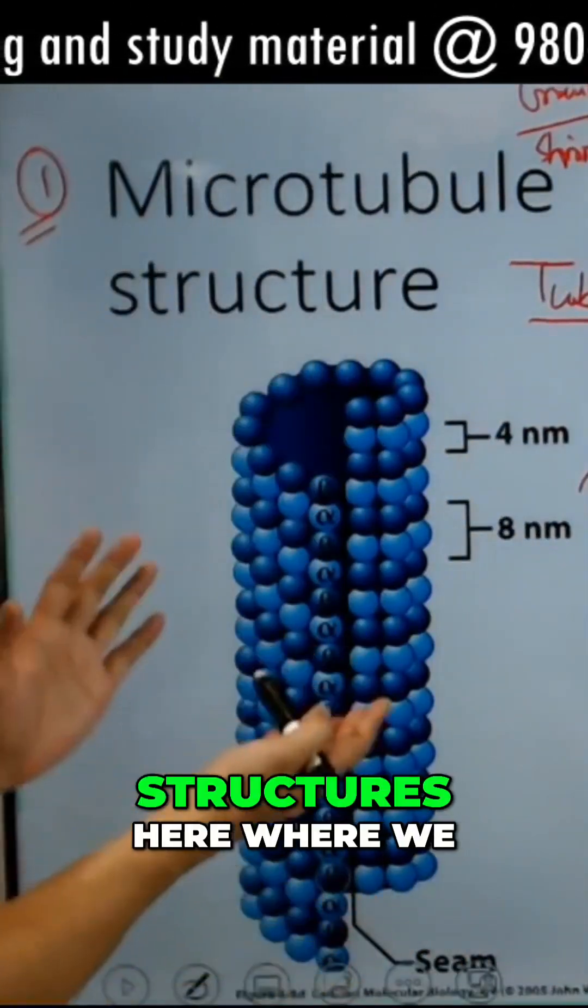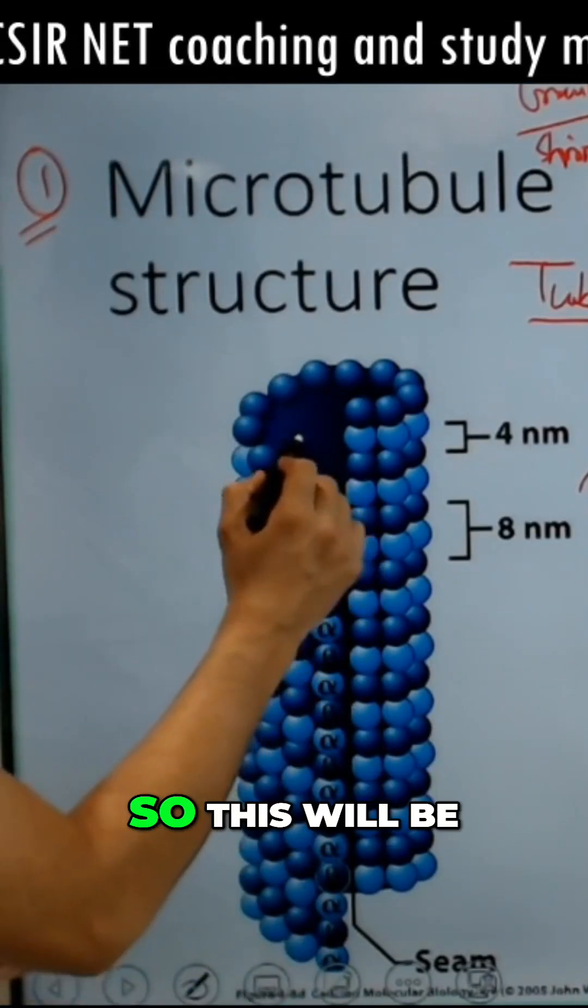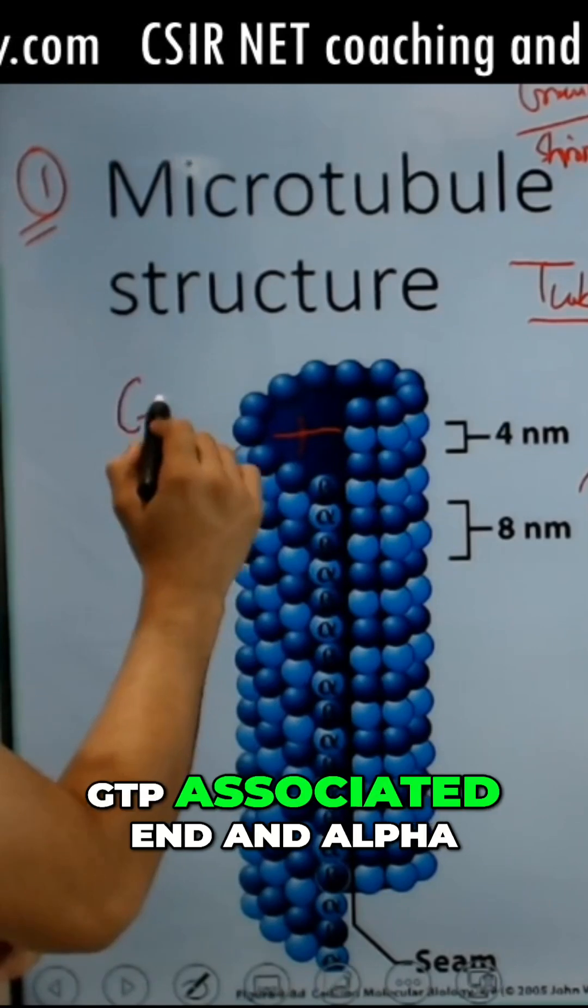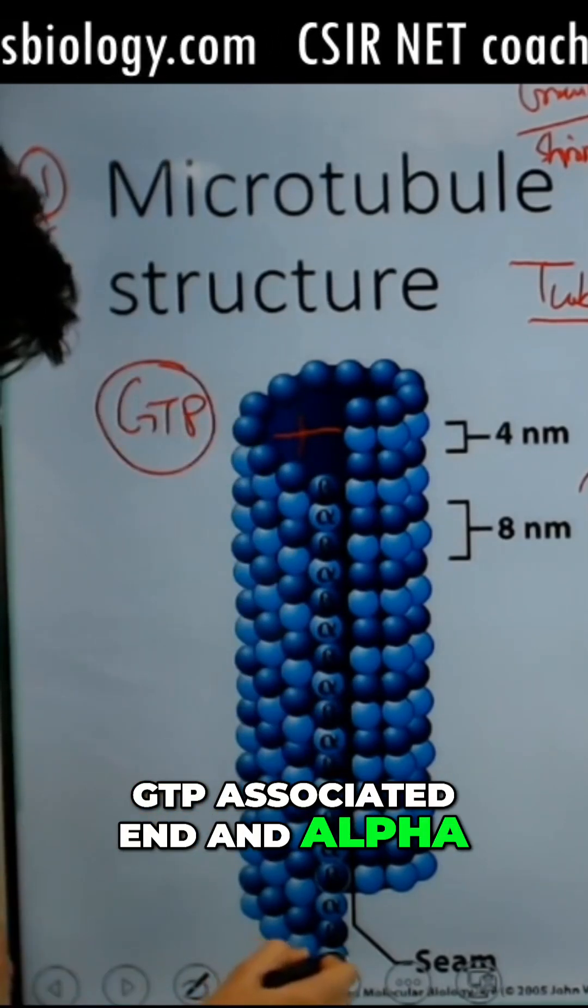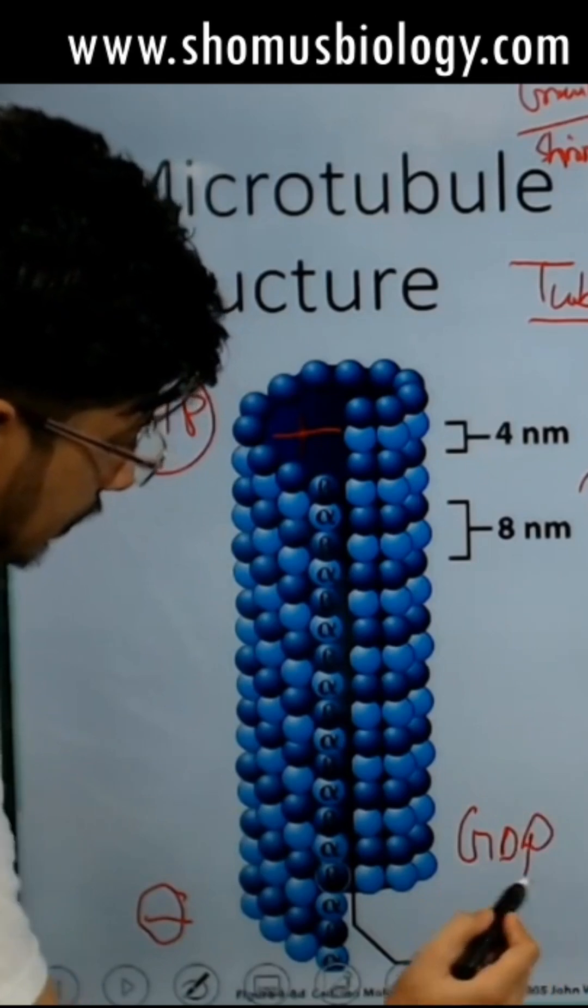You can see the structures here where we have beta-alpha, beta-alpha repeating. Beta at the end is the plus end, the GTP-associated end, and alpha is the minus end, the GDP-associated end.